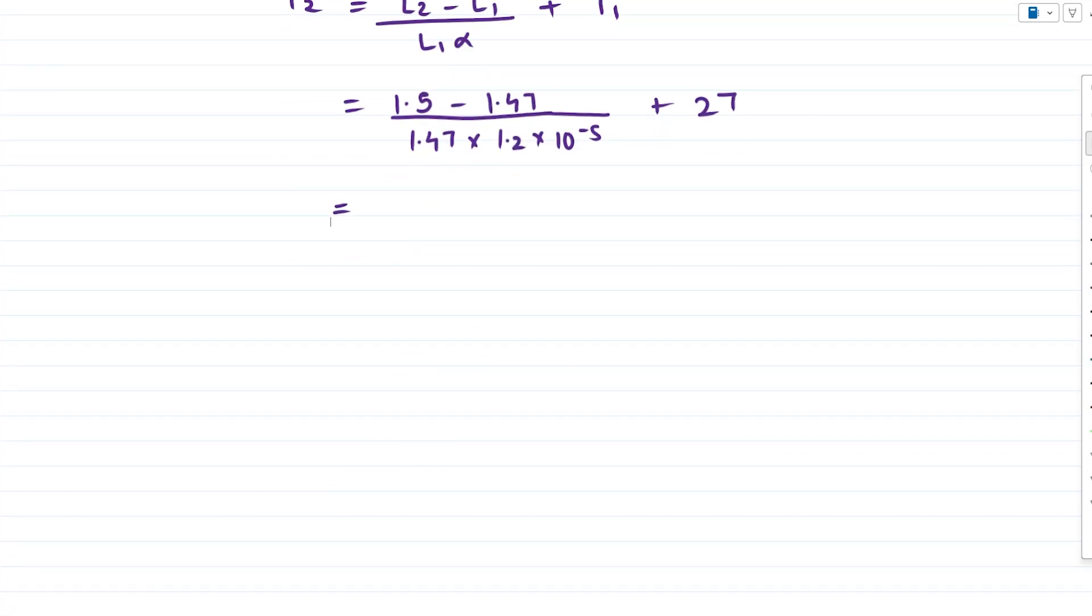So let's try to simplify. 1.5 minus 1.47 gives us 0.03, and this divided by 1.47 into 1.2 into 10 raised to minus 5, plus 27. So now you'll have to use logs for further calculation.